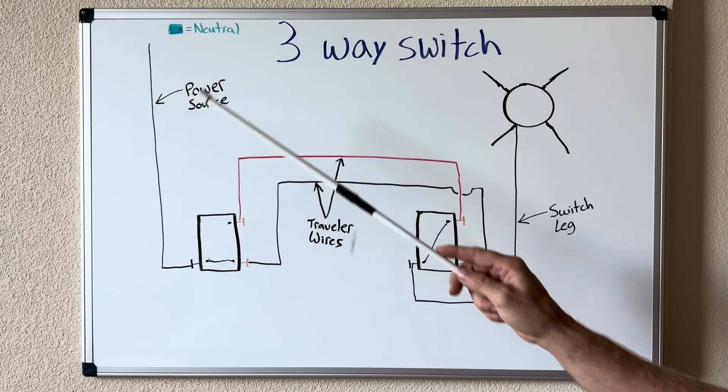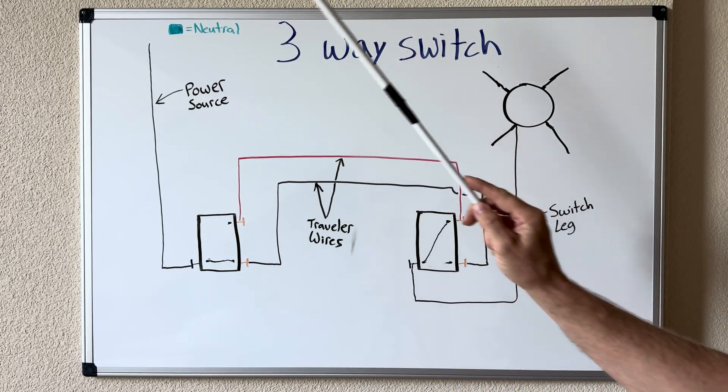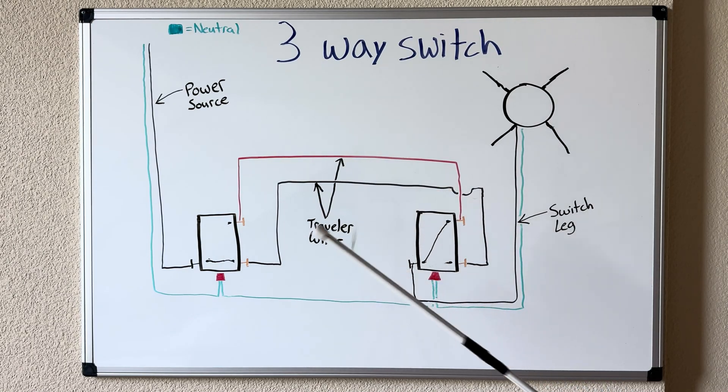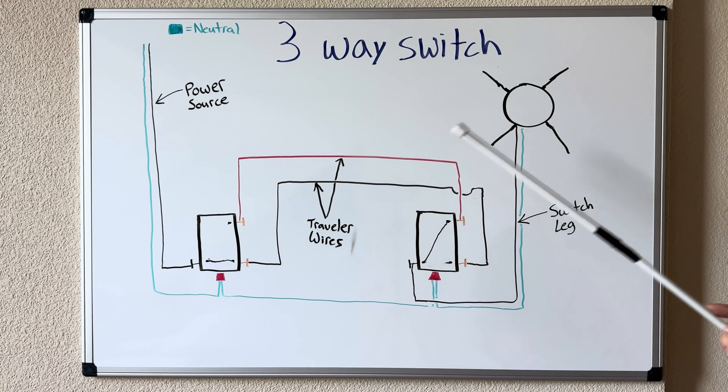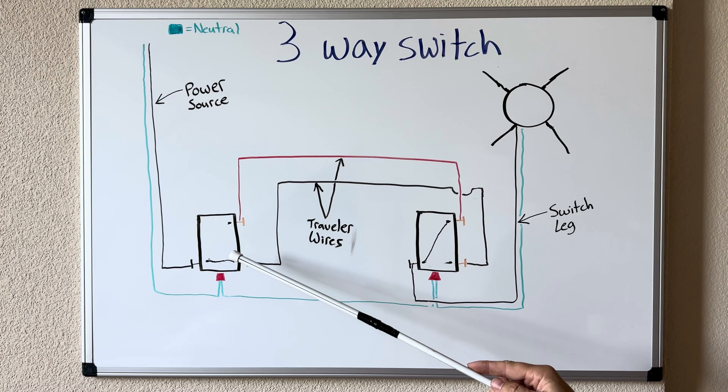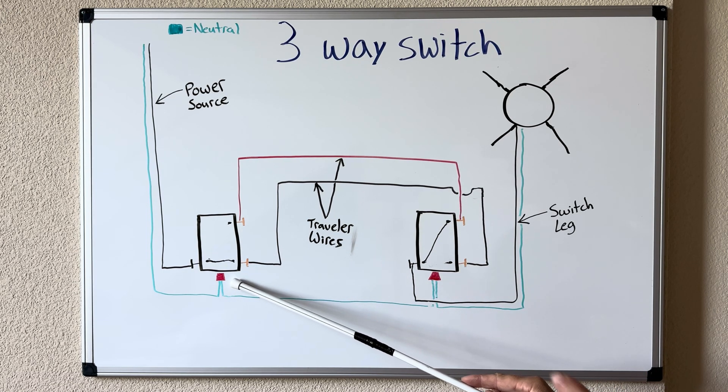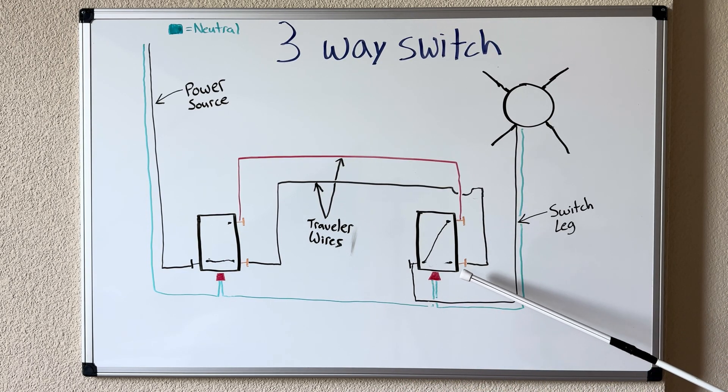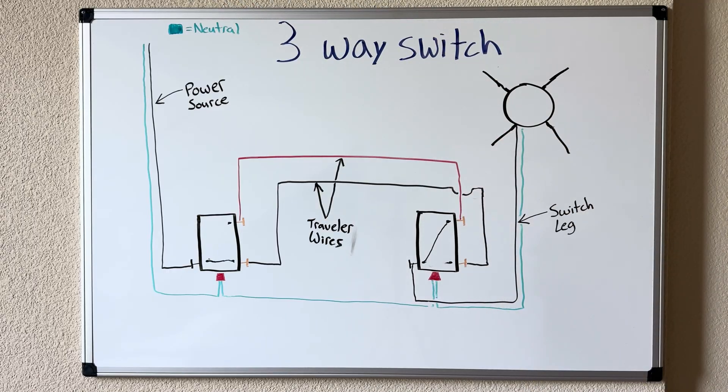So moving on we're gonna go ahead and add our neutral wire. Obviously I can't put white on this white board because it's not gonna show up so I've indicated up here that color is going to be our neutral. So our neutral is tied in now what I've done is brought it to each switch location and then all the way to our light and as you can see at the switch locations the switch itself does not require a neutral so all you do is splice it together these little red things are wire nuts bring it to your next switch location splice the neutral together and then bring it all the way up to your light that way your light has a return path for the current to flow back to the power source.